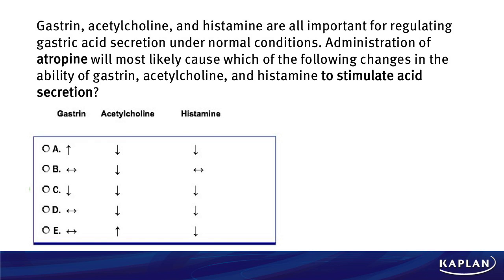Administration of atropine — and look, another question dealing with atropine means you've got to know what that drug does — will most likely cause which of the following changes in the ability of gastrin, acetylcholine, and histamine to stimulate acid secretion? The question is asking how atropine impacts the stimulation of acid secretion. Notice the answer choices use arrows: up, down, or sideways meaning it stays the same. There's a column for gastrin, a column for acetylcholine, and a column for histamine. Take a few moments and select what you think is the best answer.